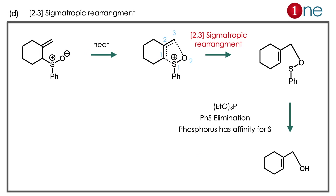It is a 2,3-sigmatropic rearrangement because only 5 atoms are involved. Let us analyze the mechanism. The sulfur has a positive charge and the oxygen possesses a negative charge. It is near to the alkene, so it can create a 5-membered ring transition state. You can count atoms 1-2-3 and the 1-2 bond — that is why it is a 2,3-rearrangement. The C-S bond breaks and the double bond shifts its electrons. The final product has oxygen attached with thiophenol. When phosphine is used, it attracts the sulfur and you get alcohol formation. Totally 5 atoms are involved — that is why it is called a 2,3-sigmatropic rearrangement. It is very rare and only occurs with unusual ylide systems.